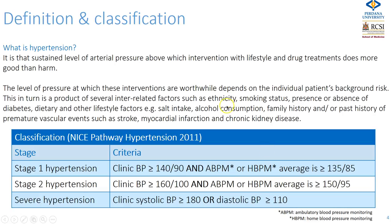These factors include ethnicity, smoking status, the presence or absence of diabetes mellitus, dietary and other lifestyle factors such as salt intake, alcohol consumption, family history of premature coronary artery disease and hypertension, or a past history of events such as stroke, myocardial infarction, or chronic kidney disease.